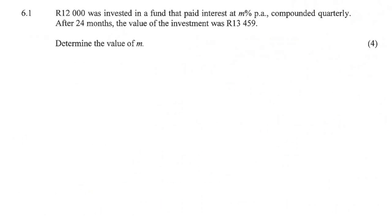12,000 Rand was invested in a fund that paid interest at M% per annum, compounded quarterly. After 24 months, the value of the investment was that. Determine the value of M.